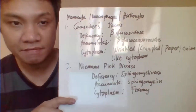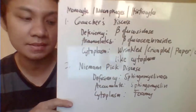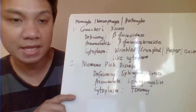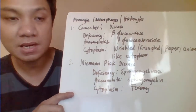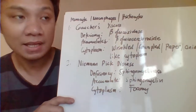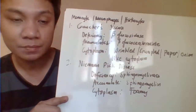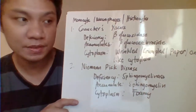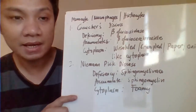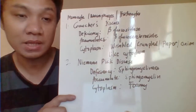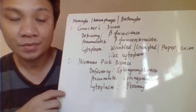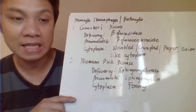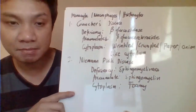Now we go to defective monocytes, macrophages, and histiocytes. The first one is Gaucher disease, characterized by deficiency of the enzyme beta-glucosidase. The result is accumulation of beta-glucocerebroside, and it is characterized by cytoplasm with a characteristic wrinkled, crumpled, or onion-skin appearance — also called a crinkled paper cytoplasm.